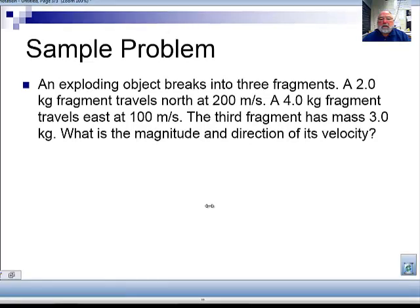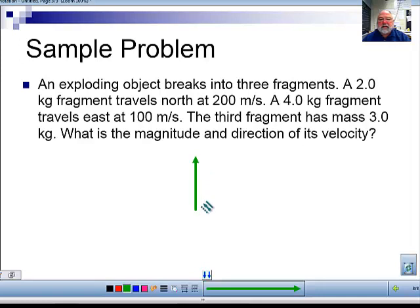So we have our first object is two kilograms and it travels north at 200. So that's our first object. Our second object is four kilograms and travels east at 100. These two vectors have to add up to zero. When we're doing forces, we call that vector the equilibrant, the vector that brings it back into equilibrium. We're not really talking about equilibrium at this point, so we won't call it an equilibrium, but it's going to be something like that. So this is what we're trying to find. We're trying to find the pink vector.